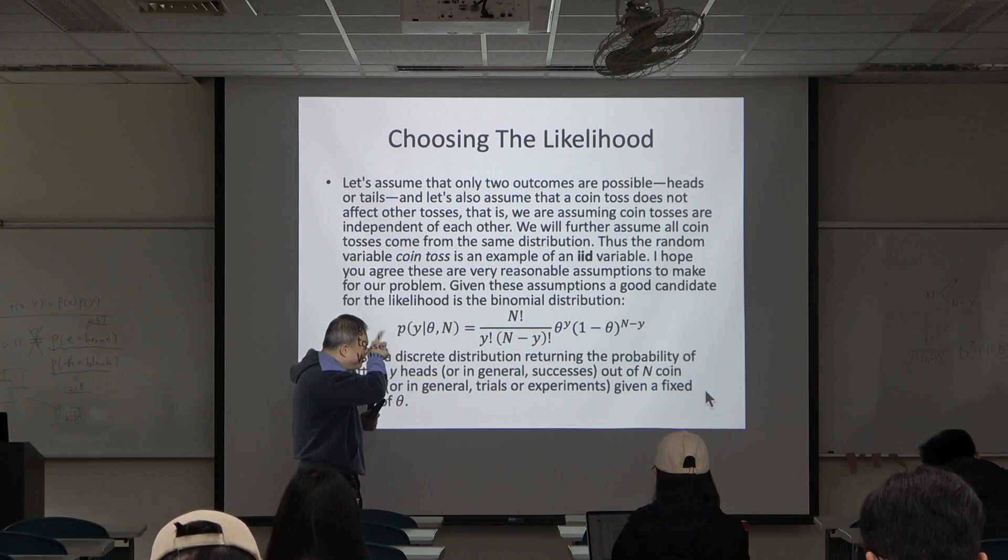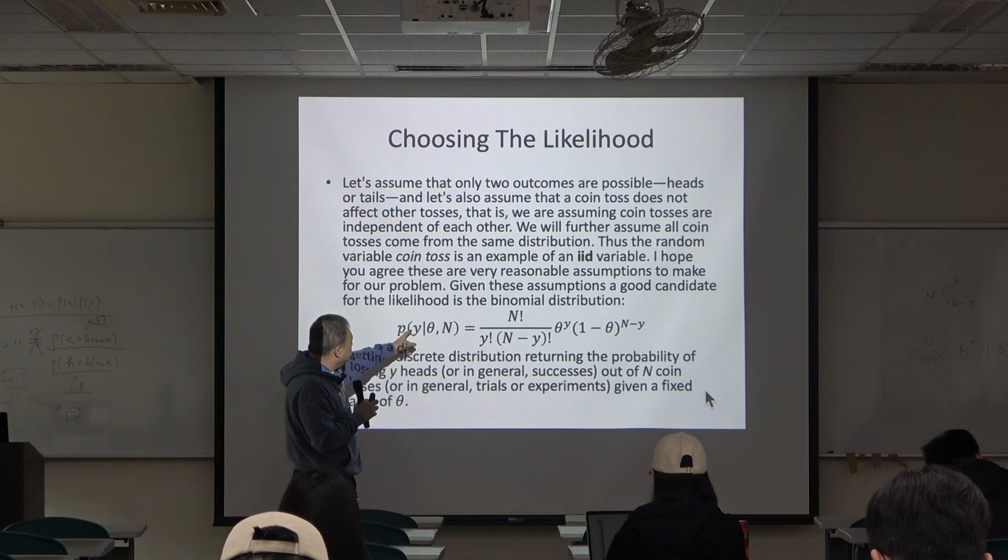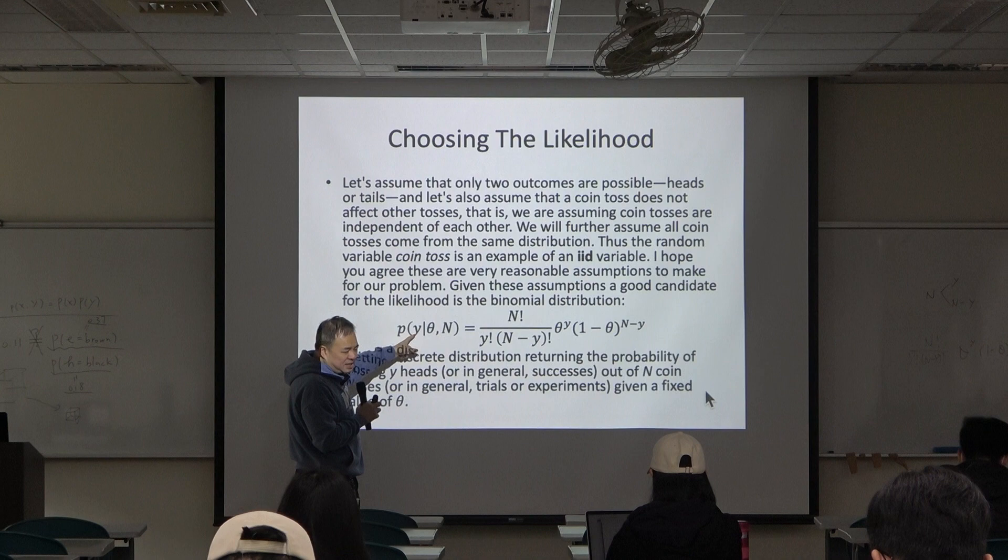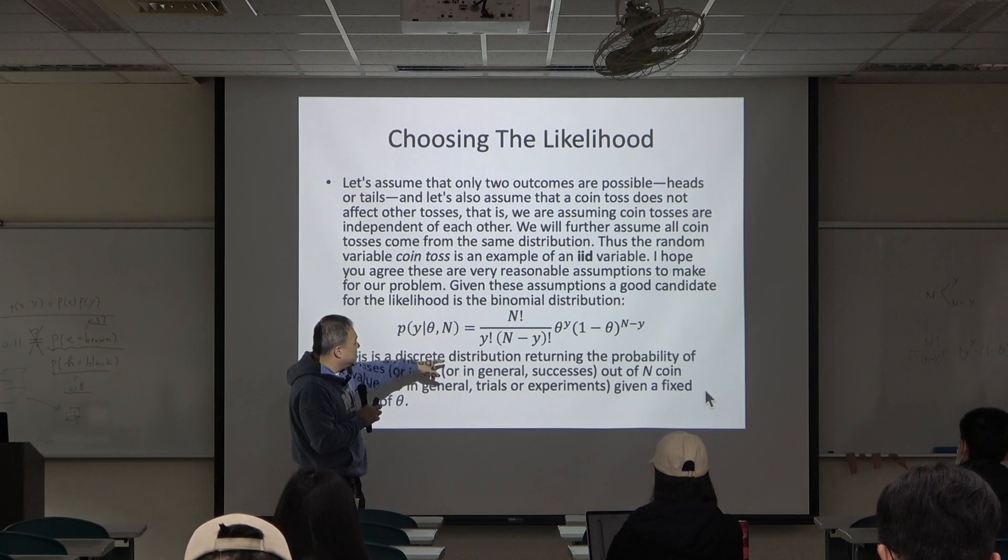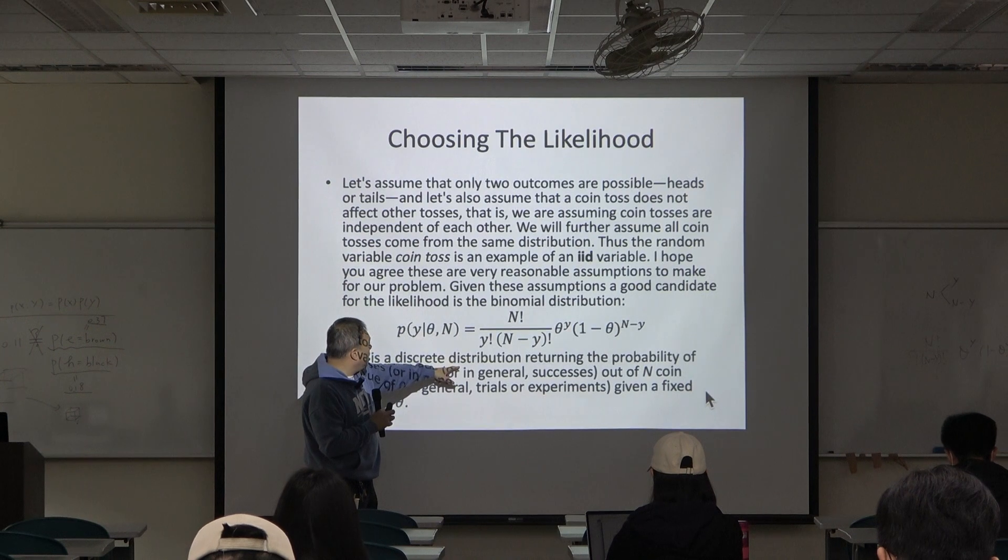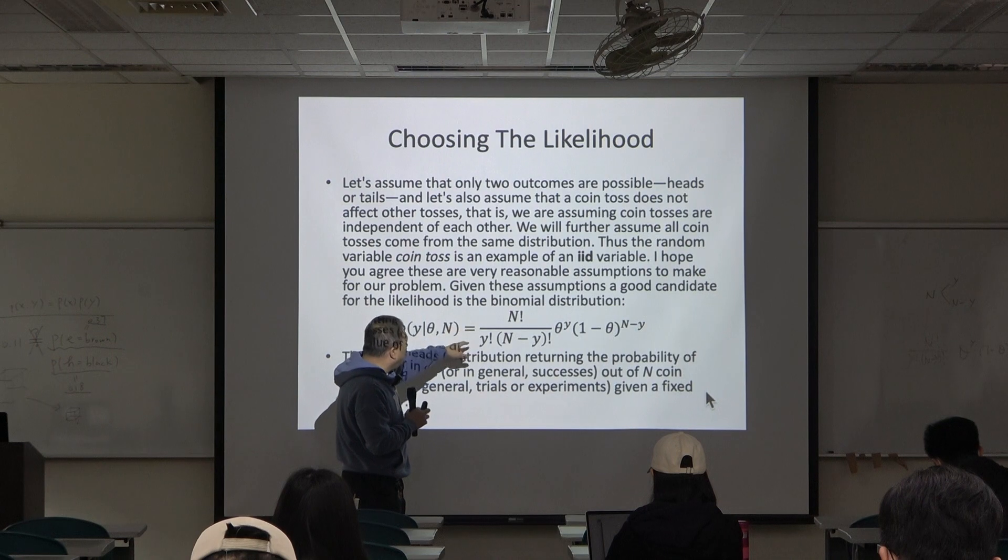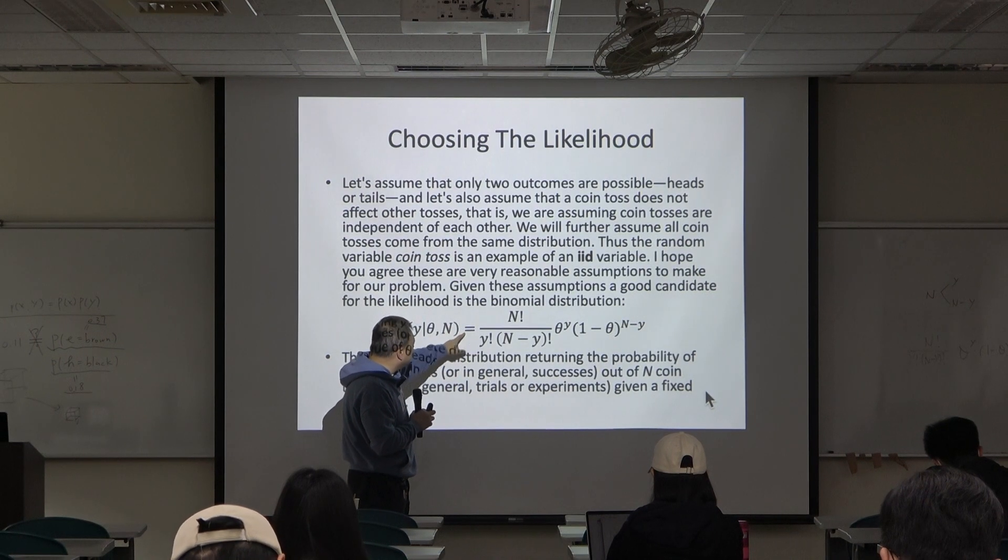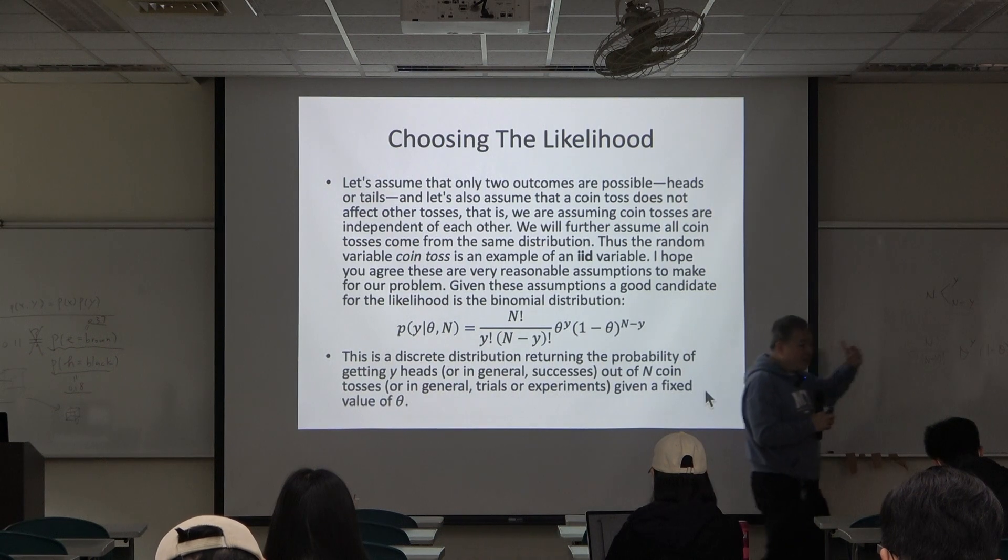That's why two things: because y is the count, it's an integer, so this is a discrete distribution. And also, because we use y, the summation from y equals zero to n of this formula will add up to one.